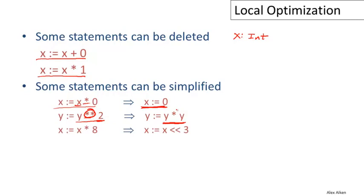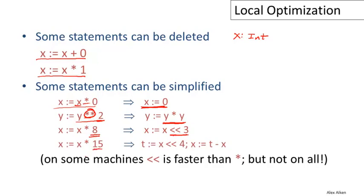Another example of substituting one operation for another: if we have a multiplication by a power of two, we can replace that by a left bit shift. For example, multiplying by eight is the same as shifting the binary representation of X over by three bits. It doesn't even have to be a power of two — multiplication by other numbers can be replaced by some combination of shifting and subtractions. All of these are examples of algebraic simplifications — exploiting properties of mathematical operators to replace more complex operations by simpler ones.